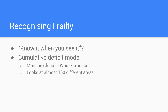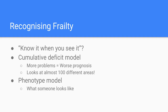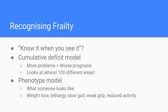A potentially more usable idea is the phenotype model — or what someone basically appears to be like — which looks at weight loss, lethargy, slow gait speed, weak grip, and reduced activity. Three or more of these are classed as being frail. I'm just going to highlight two parts here: slow gait speed and weak grip. We'll come back to them in a minute.